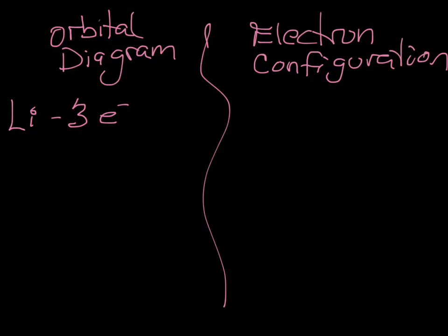The third electron will then go into two S. So to write the orbital diagram, we're going to write one S. And I usually just draw a line instead of a box because I find it easier. And we'll put two electrons in one S and one electron in two S. That takes care of all the electrons in lithium. So we've just written the orbital diagram for lithium.